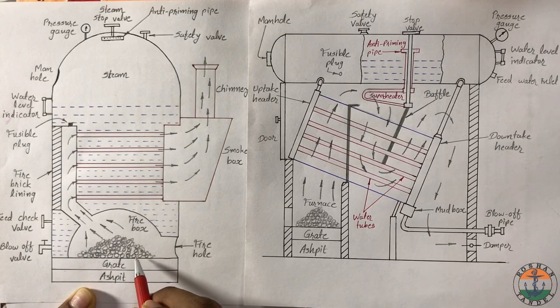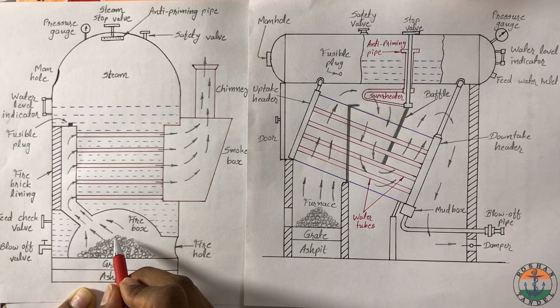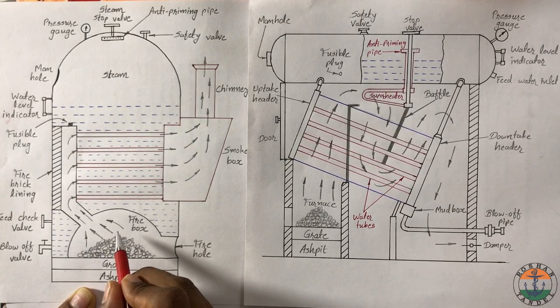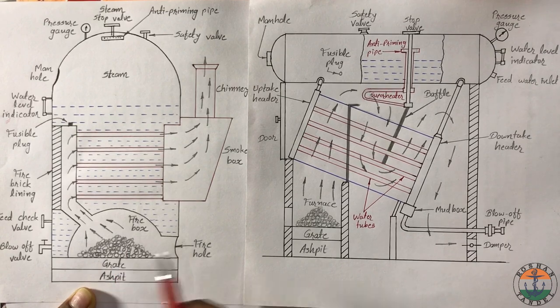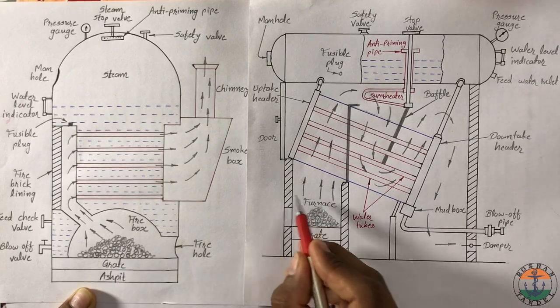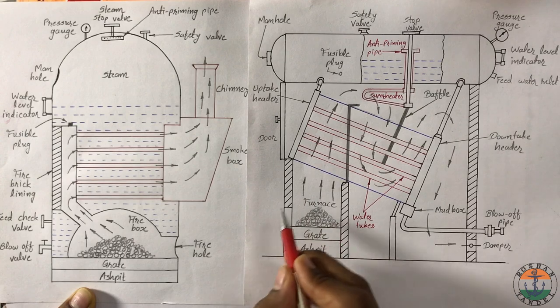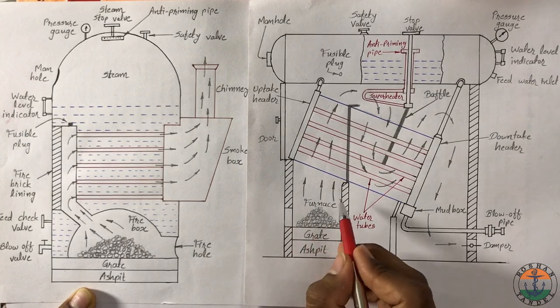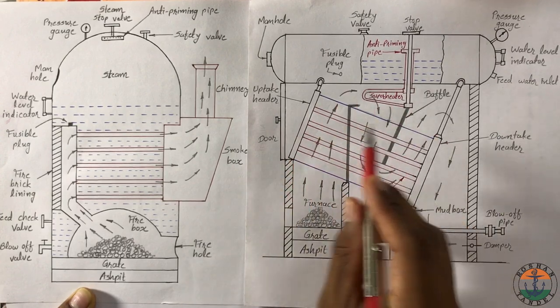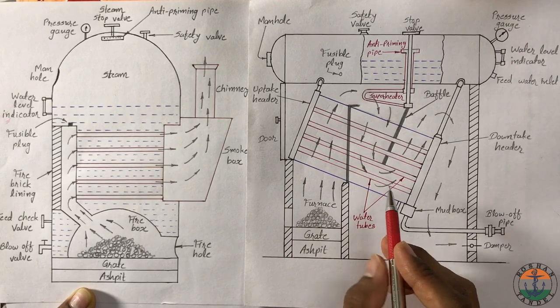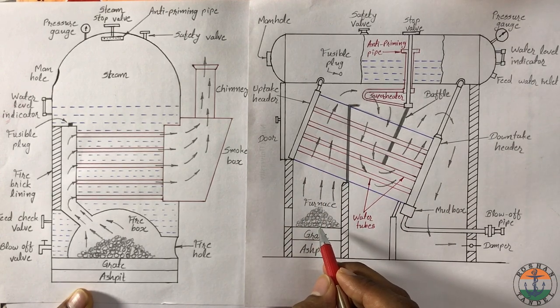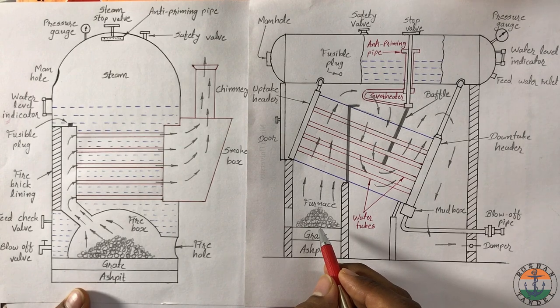Here furnace is provided inside the boiler shell, so it is called internally fired boiler. In this boiler, if you make a provision of furnace outside the boiler main part, then it will fall into the category of externally fired boiler.